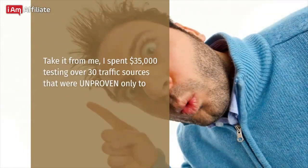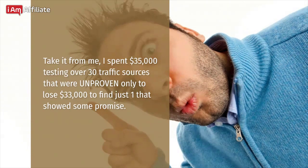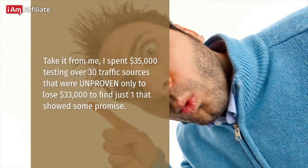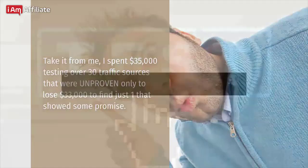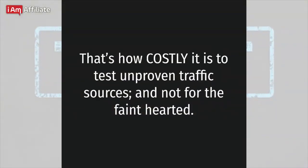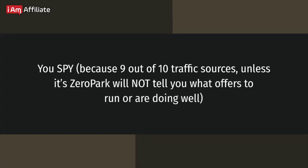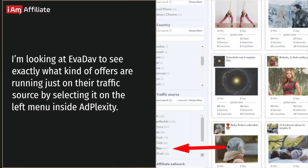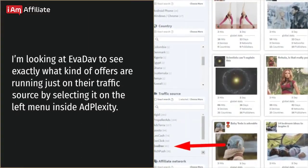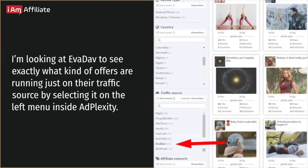I spent $35,000 testing over 30 traffic sources that were unproven only to lose $33,000, finding just one that showed some promise. That's how costly it is to test unproven traffic sources. 98% of affiliate marketers prefer to pick a traffic source and then run offers proven to convert on those sources. How do you find out what works best, which vertical kills it, and which to avoid? You spy — because 9 out of 10 traffic sources won't tell you what offers are doing well. I'm looking at Evadav to see exactly what kind of offers are running on their traffic source.